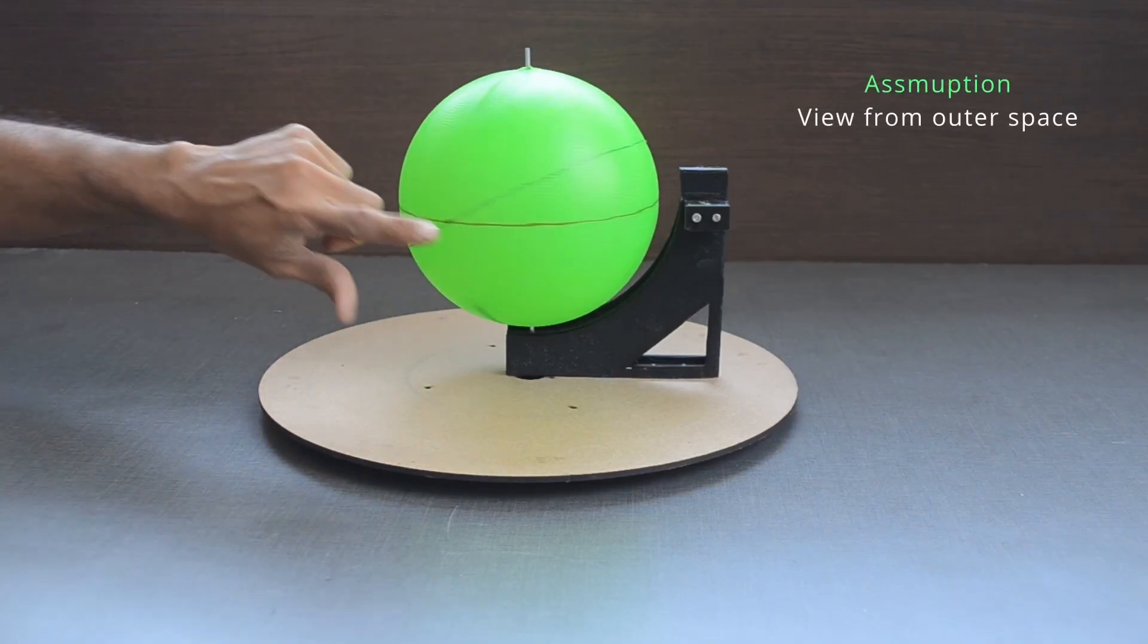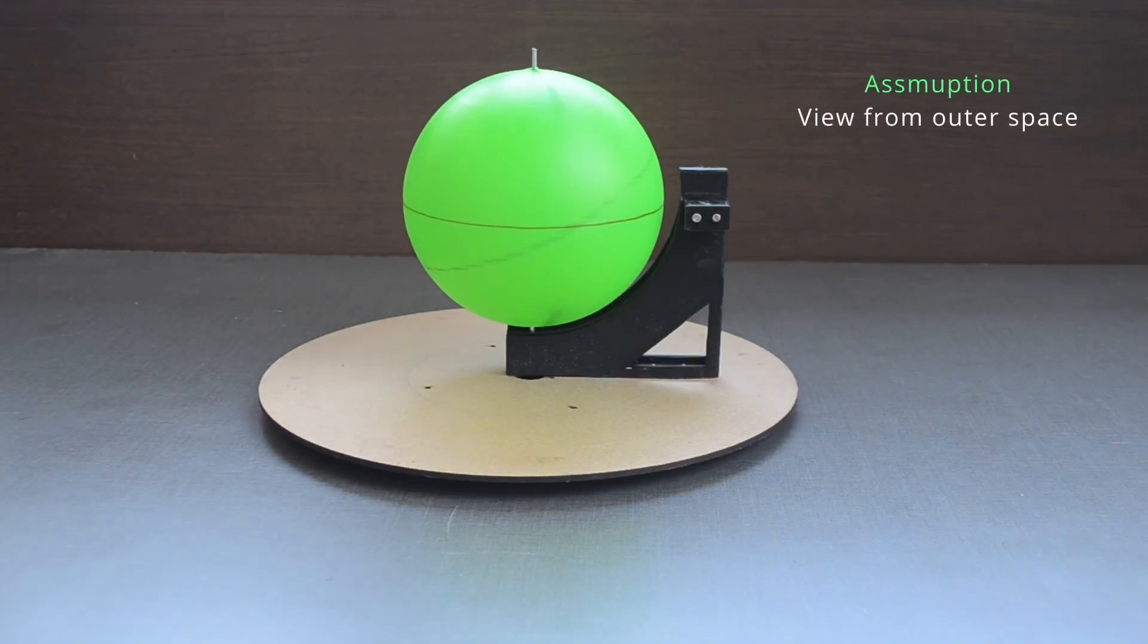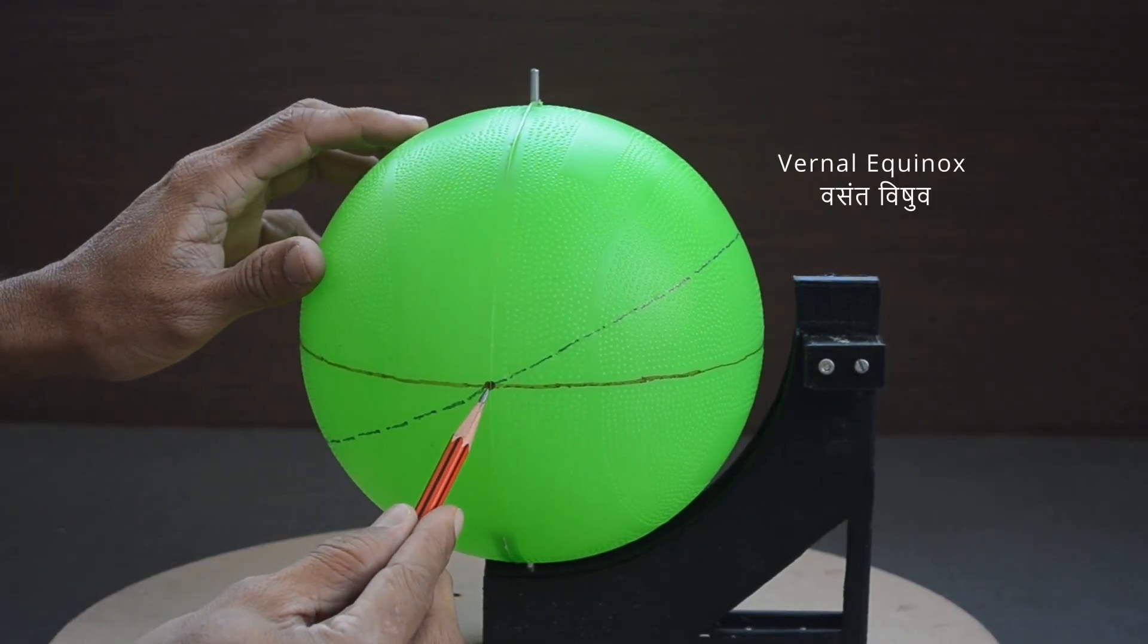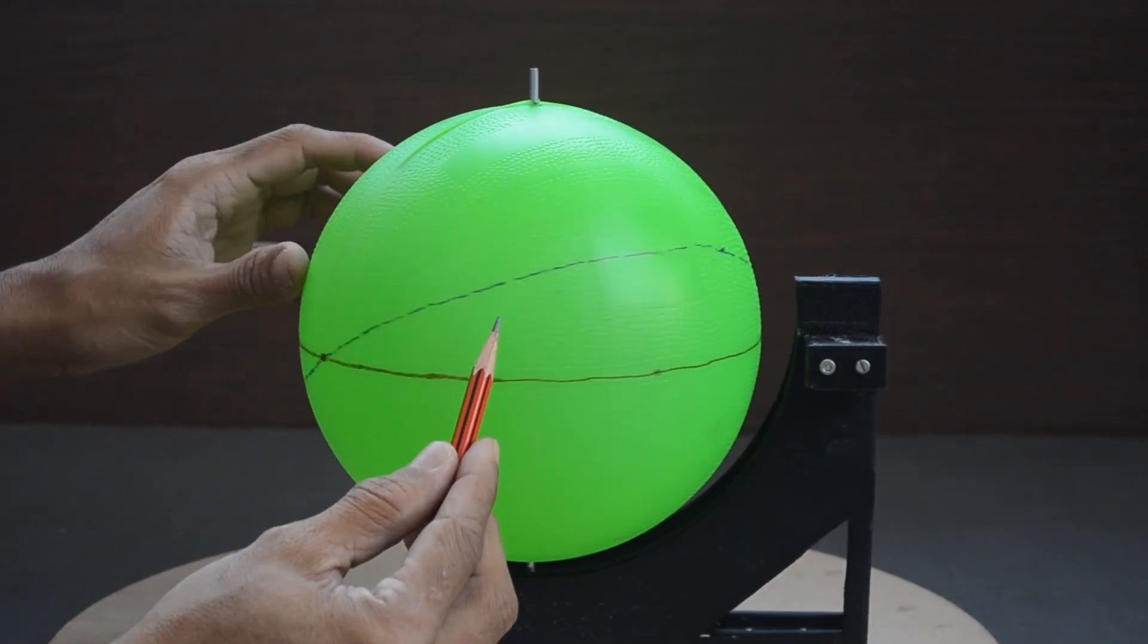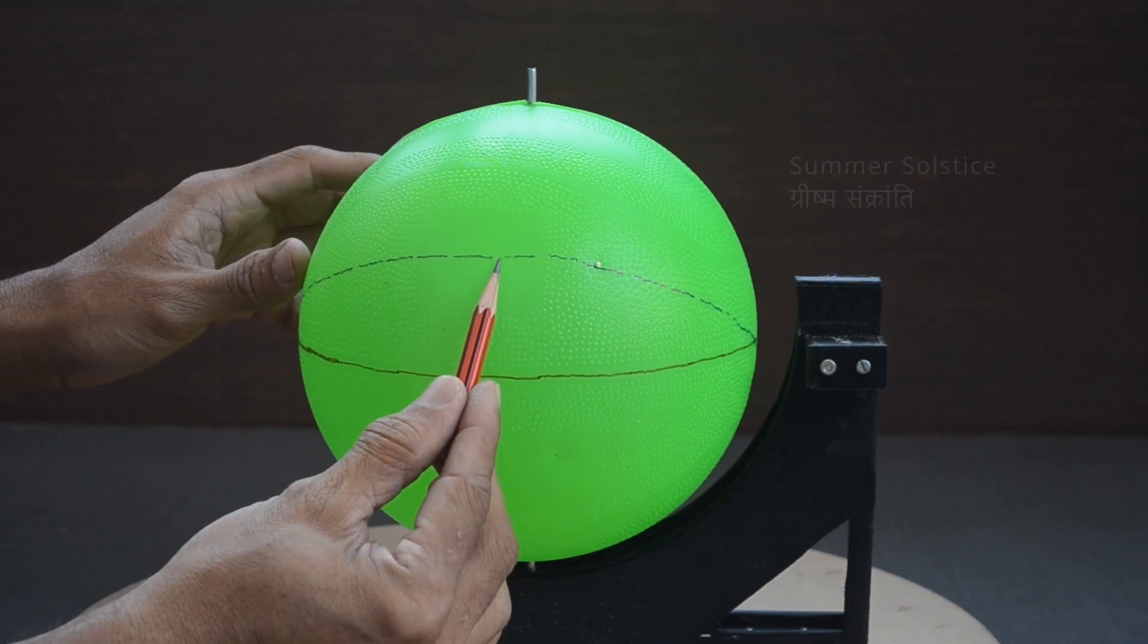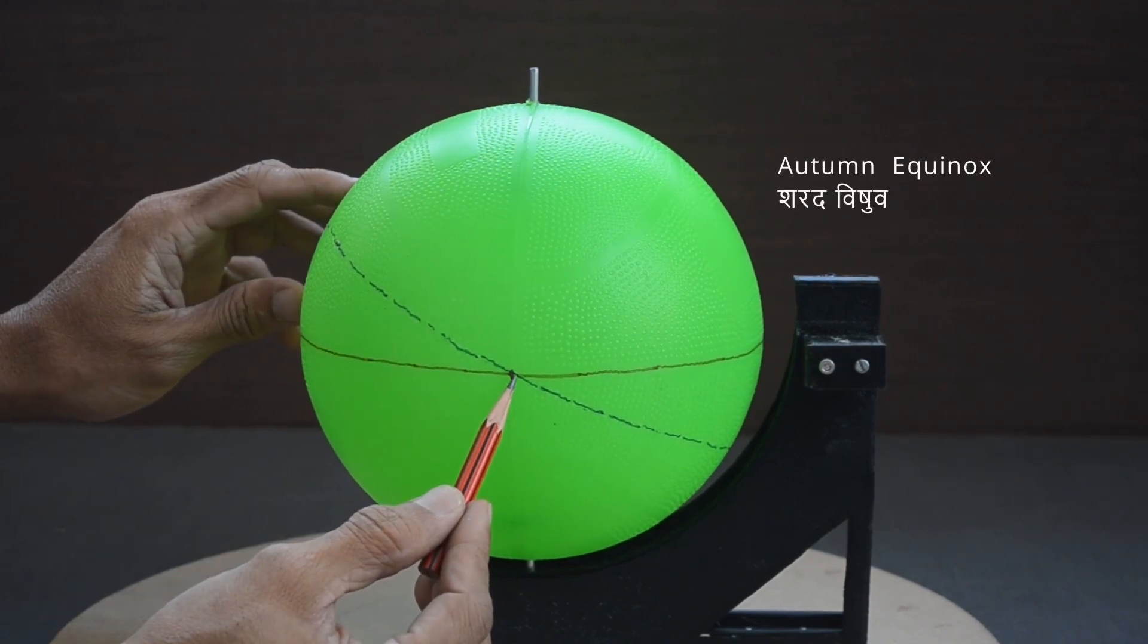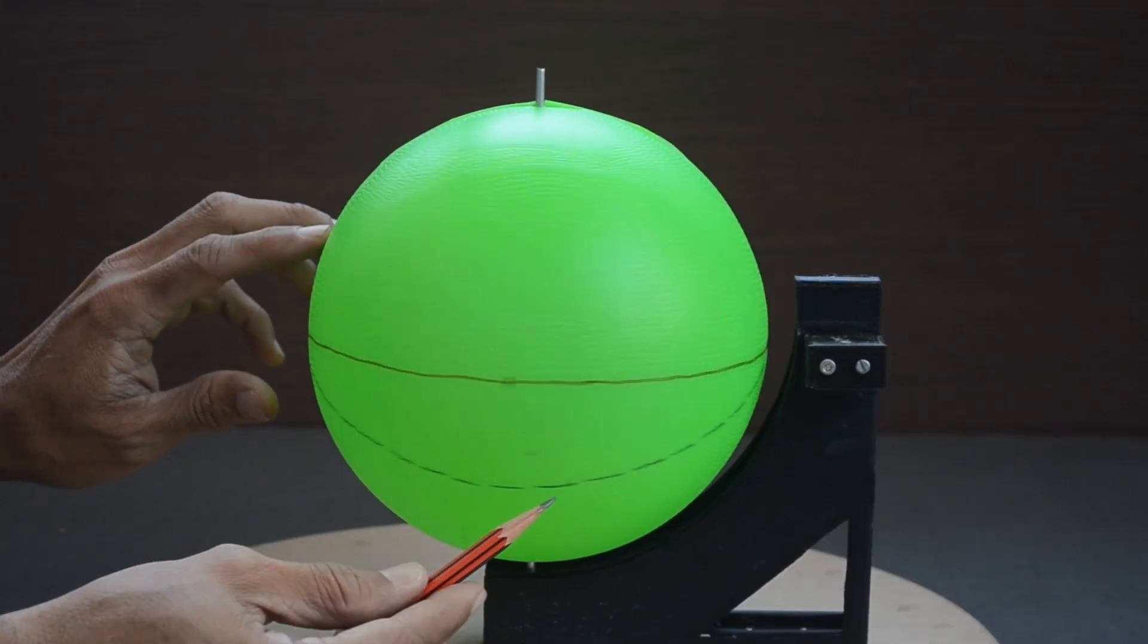Assume that we are looking at the celestial sphere from outer space. This point is the vernal equinox, this point is summer solstice, and this one autumn equinox, and finally winter solstice.